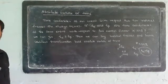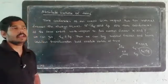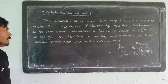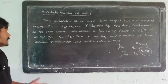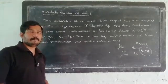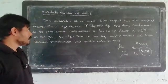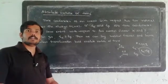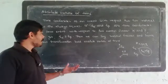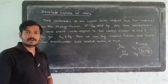In inertial frames, one event has time coordinates T-alpha and T-beta. We find that T-alpha is equal to T-beta. So we can say that inertial frames, and hence Galilean transformation, hold the absolute nature of time. In inertial frames where Galilean transformation applies, the absolute nature of time holds.